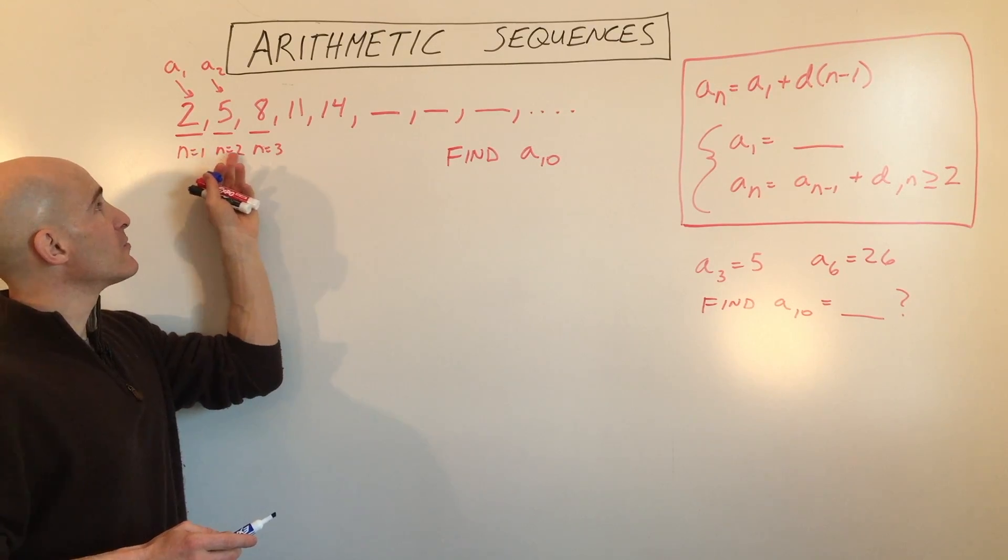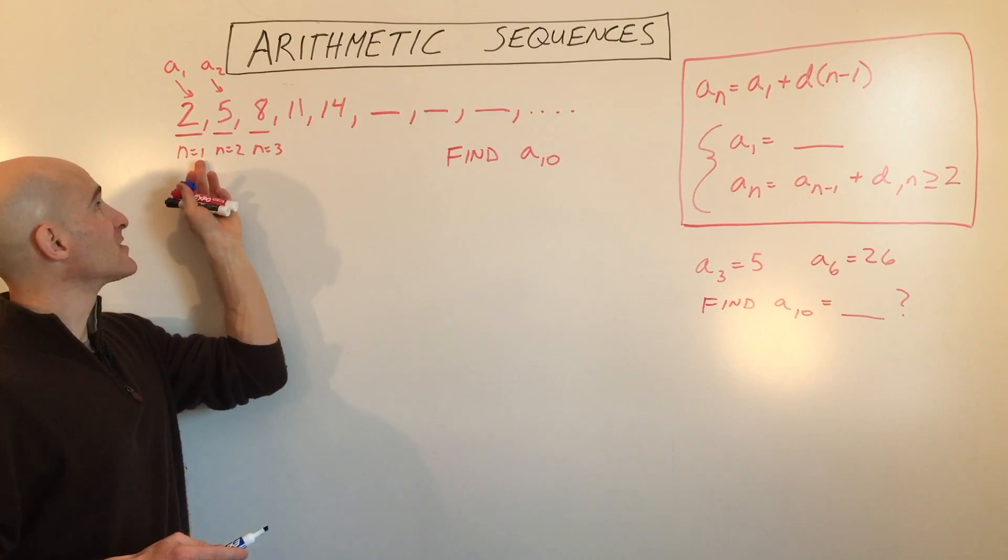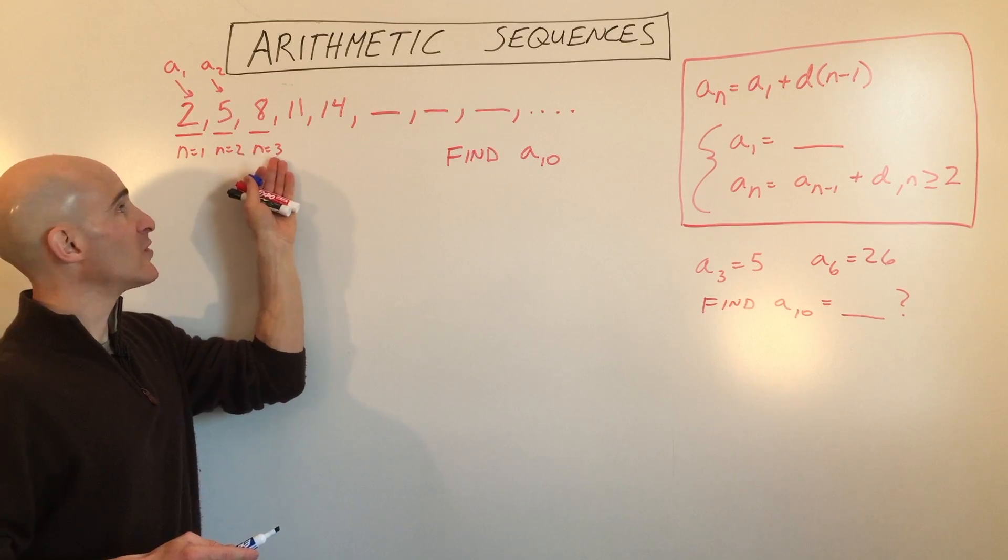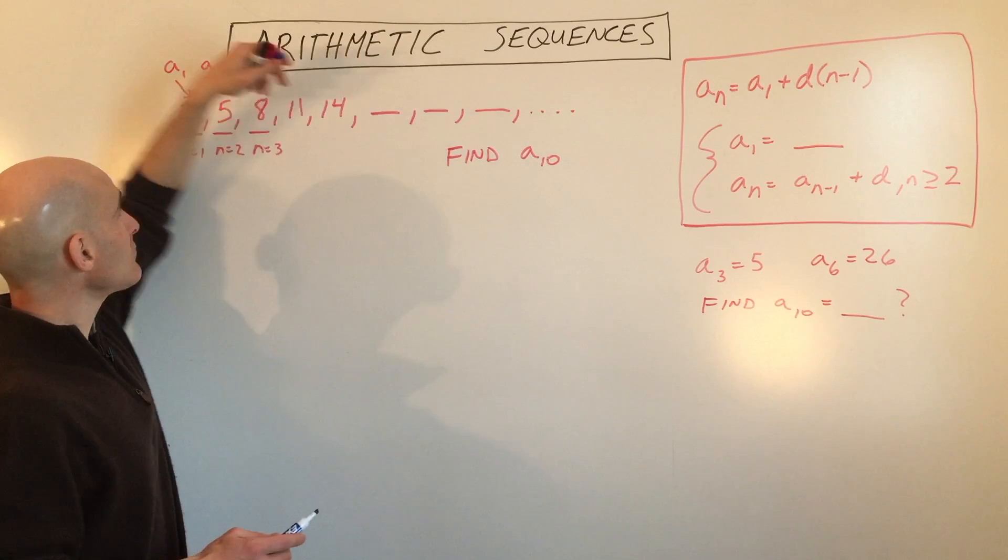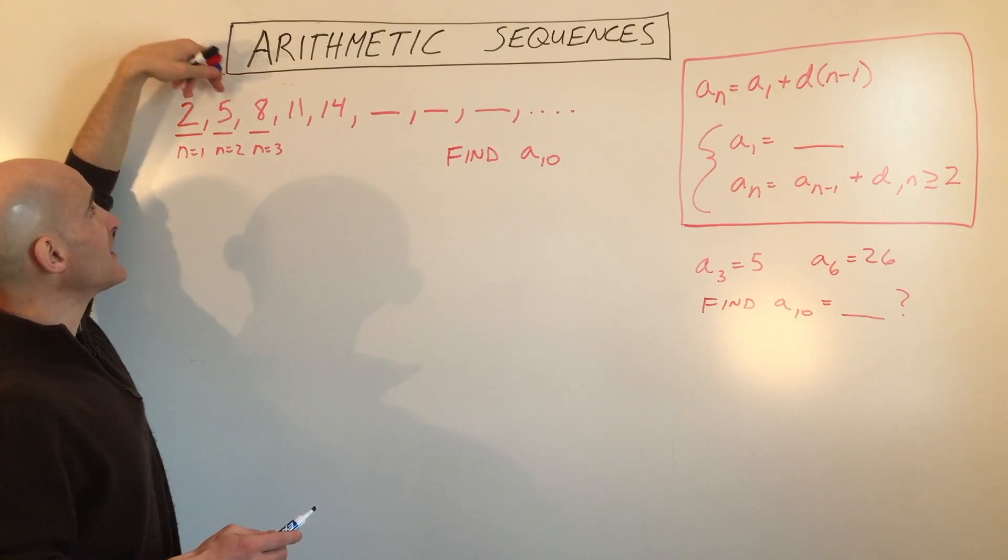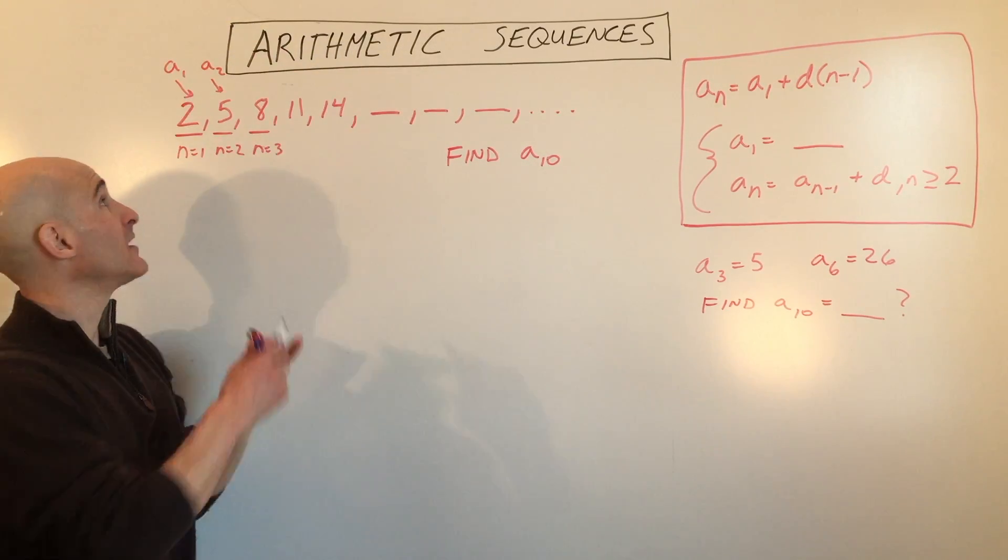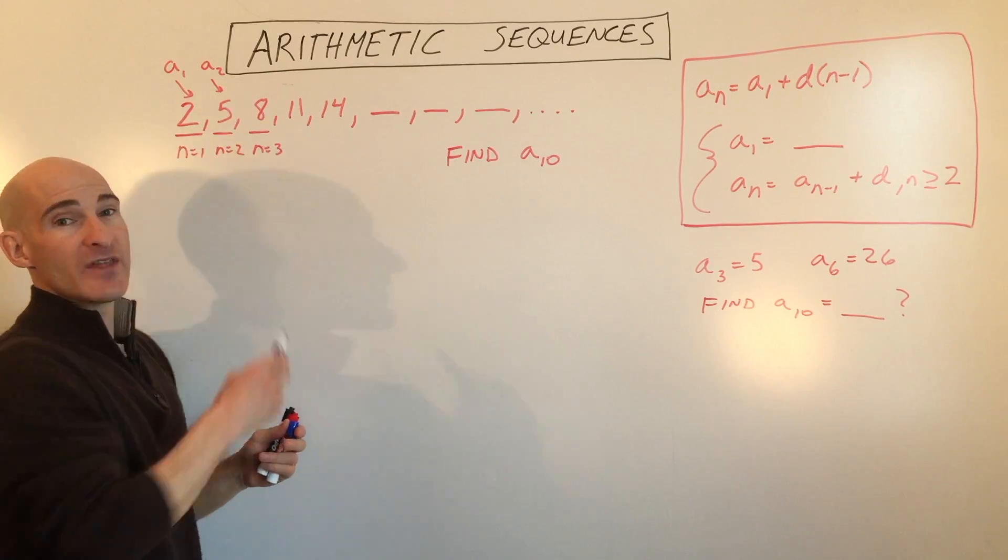One is the term number. So you can see I have listed n equals 1, n equals 2, n equals 3. That's the term that you're on. And then there's a sub 1, a sub 2, a sub 3, and so on, and that represents the value of that term.